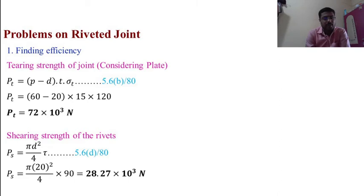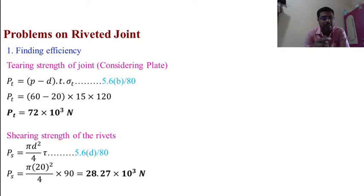Tearing strength of the joint considering the plate: PT = (P − d) × t × σT — equation 5.6B, page 80. PT = (60 − 20) × 15 × 120 = 72 × 10³ N.